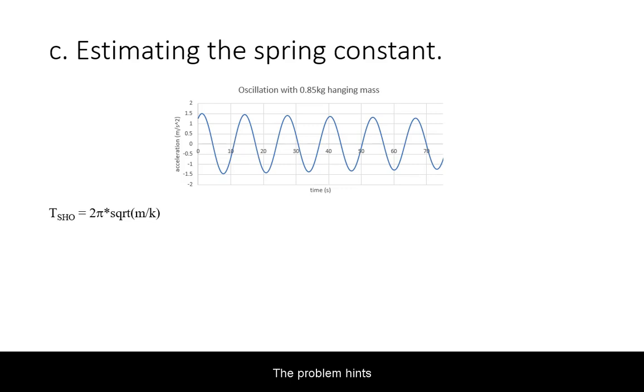The problem hints that we should use the simple harmonic oscillation formula for theoretical period to back-calculate the spring constant. Notice that the graph gives you the mass. Solve for the unknown and plug in with units.